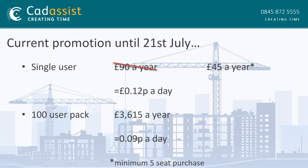Currently there is a promotion running until the 21st of July: for a single user you can get a seat for £45 a year, based on a minimum 5-seat purchase. That works out at around £12 a day per person. This makes the 25-user pack redundant at the moment, and doing the maths, the promotional price would be more effective than the 100-user pack up to around 80 seats.